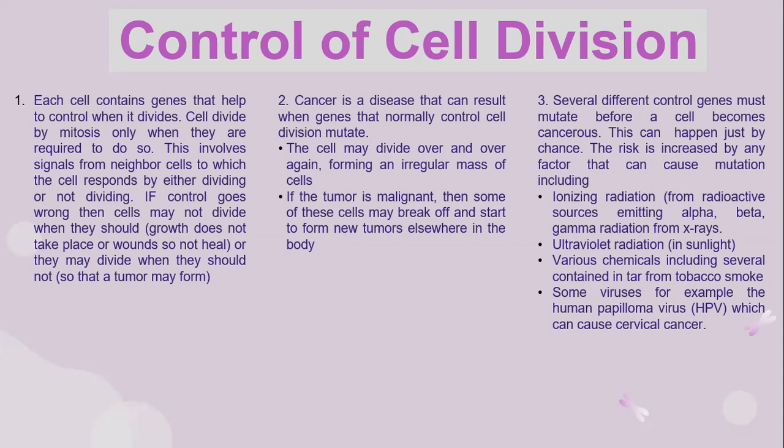The cell may divide over and over again, forming an irregular mass of cells. If the tumour is malignant, then some of the cells may break off and start to form new tumours elsewhere in the body. Cell division control genes must mutate before the cells become cancerous, and this can happen just by chance. The risk is increased by any factors that can cause mutation, including ionising radiation from radioactive sources emitting alpha, beta, and gamma radiation, and from X-rays. Mutation can also be caused by ultraviolet radiation from sunlight.